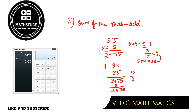So to summarize: if the sum of the tens digits is even, the last two digits are 25 — multiply the tens digits, take half the sum, and add them together. If the sum of the tens digits is odd, the last two digits are 75 — multiply the tens digits, subtract 1 from their sum, divide by 2, and add. I hope you've understood — it's a great trick!